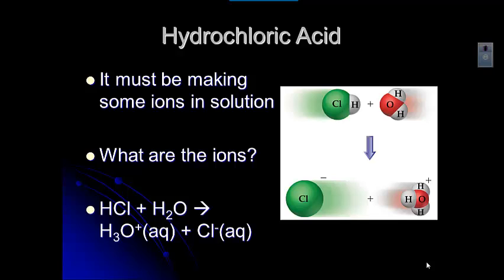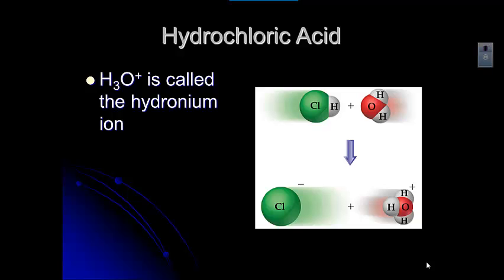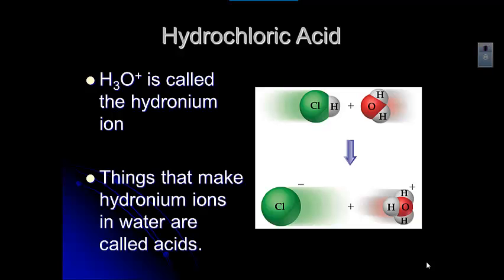Anything that makes hydronium ions in water is what we call an acid, and those are generally electrolytes because they form ions in solution. So with hydrochloric acid we have H3O+, the hydronium ion, and that is how we define an acid.